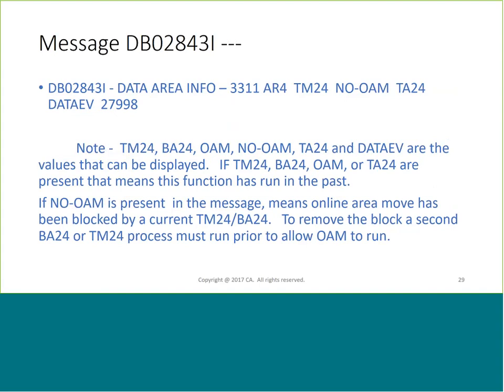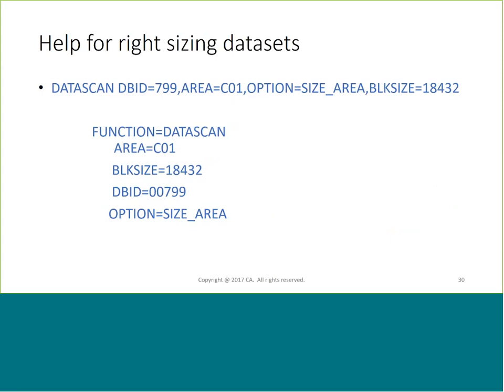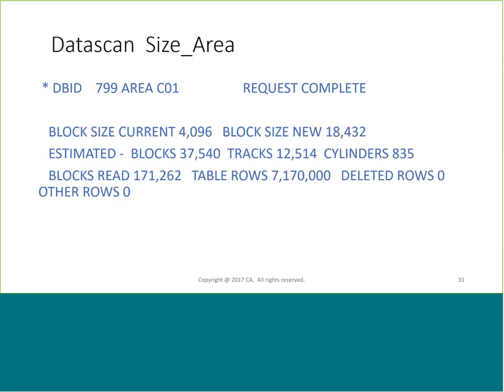Data scan is a new function to help you figure out what it costs to change block sizes. Say your block size is 4K and you want to go to 18,432 - you specify the new block size you want and the output report tells you how many cylinders you need to hold the data and how many rows are in there. The result would be 100% full once done, so you need to decide how much free space to add. If you want 10% free space, factor that in. Assuming no growth, 10% may suffice, but if you want growth allowance, consider 20-25%. I would also strongly recommend turning dynamic extend on as a best practice standard.